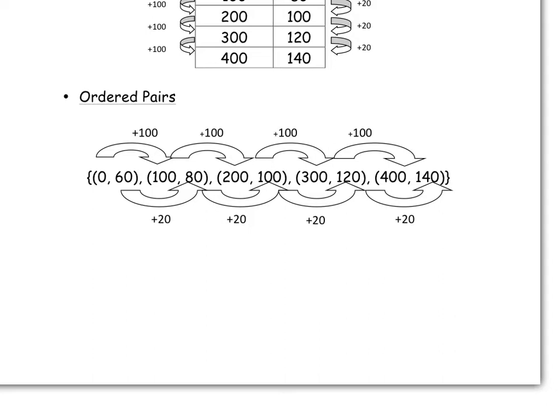Ordered pairs would be basically all those represented as points. So when your x value goes up 100, your y value goes up 20.